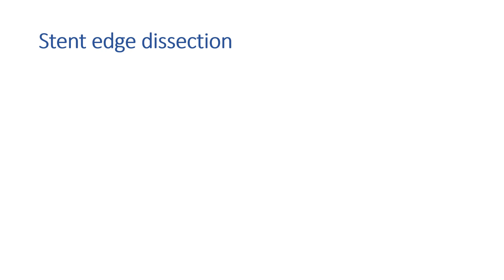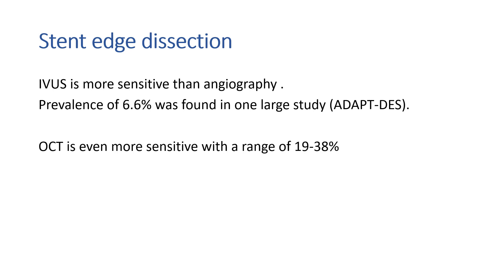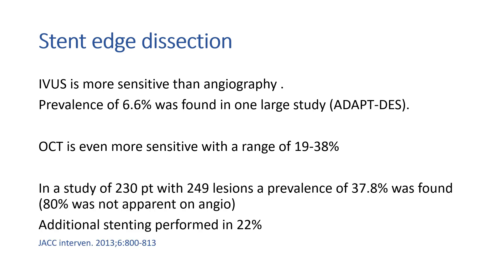What do we know about stent edge dissection? There have been many studies, although small. Intravascular imaging using IVUS was shown to be more sensitive than angiography, with a prevalence of 6.6% in one large study — the ADAPT drug-eluting stent study. OCT is even more sensitive, with a range of 19 to 38%. In one study of 230 patients with 249 lesions, the prevalence was found to be 37.8%. Eighty percent of these lesions were not apparent on angiography, and only 22% of these patients required additional stenting.